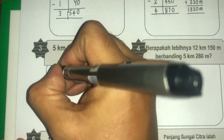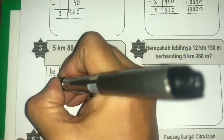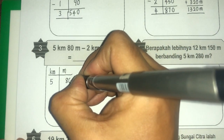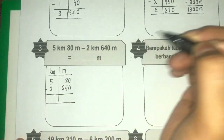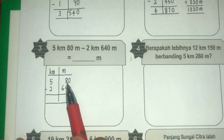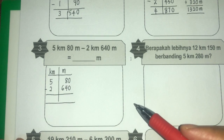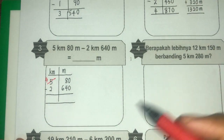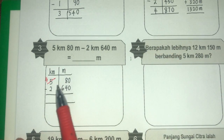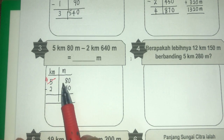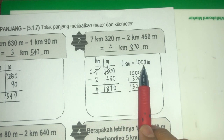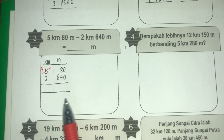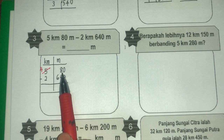Kita selesaikan secara beransur-ansur. Masukkan 5 kilometer dalam rumah kilometer, 80 meter, tolak dengan 2 kilometer, 640 meter. Nombor 80 kecil, nak tolak dengan 640 besar — tak boleh. Kita perlu pinjam. Bila kita pinjam, di sini jadi 4. Bila pinjam 1 kilometer, dia kena bertukar menjadi meter — 1 kilometer sama dengan 1000 meter. Bermaksud kita tukarkan 1 kilometer yang dipinjam jadi 1000. Jadi 1000 tambah 80 ialah 1080.